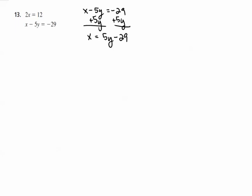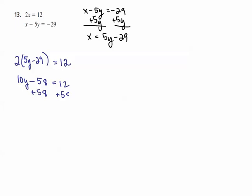Now I take the other equation, 2x equals 12, and substitute in the new name for x, which is 5y minus 29: 2 times (5y minus 29) equals 12. Distributing, I get 10y minus 58 equals 12. Adding 58 to both sides, I get 10y equals 70, so y is equal to 7.